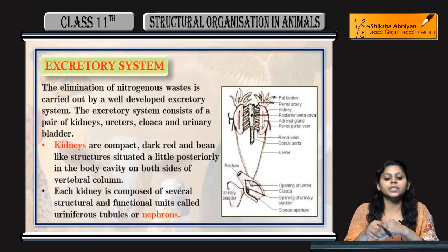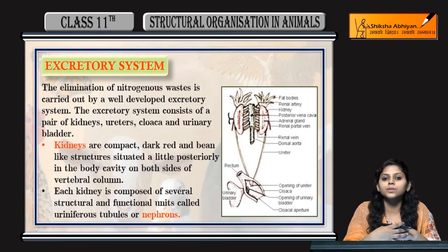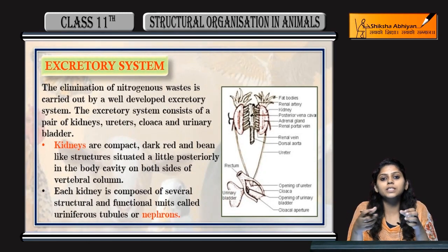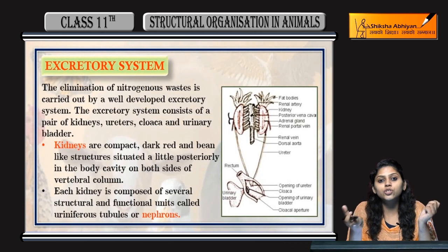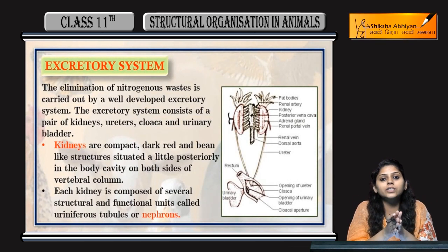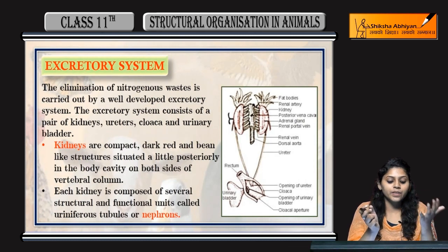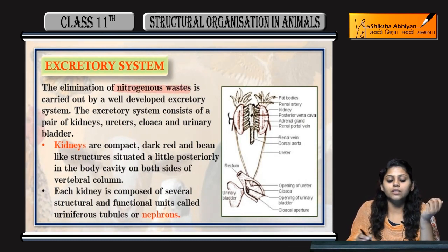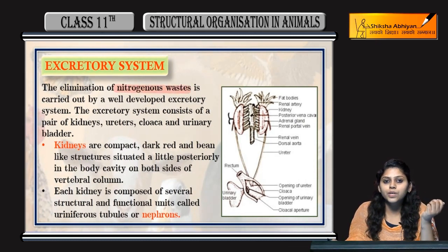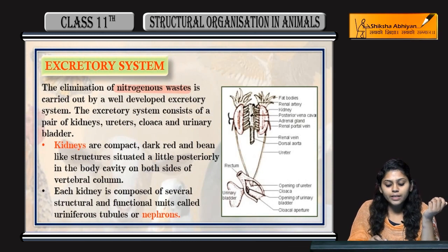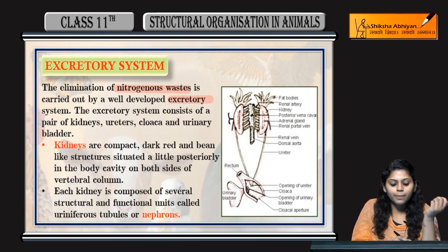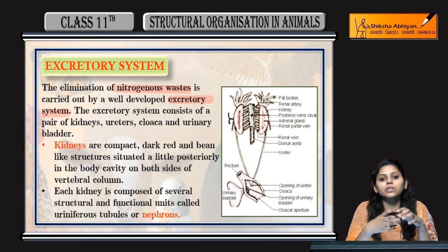Now, coming to the excretory system of frogs. Excretory system means kuch excretion hogi. Jahan se excretion hoti hai frogs ki, that forms the excretory system. Elimination kis ki hogi? Nitrogenous waste products ki hogi, jo carried hoote hai by a well-developed excretory system.